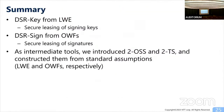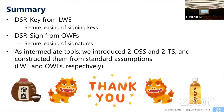Let me summarize. We constructed two types of secure leasing for digital signatures. The first is DSR key, where signing keys can be leased, based on LWE. The second is DSR sign, where signatures can be leased, based on one-way functions. As intermediate tools, we introduced two-tier one-shot signatures and two-tier tokenized signatures, which are weaker variants of one-shot signatures and tokenized signatures from standard assumptions like LWE and one-way functions. Thank you for your attention.